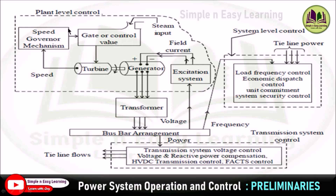If the differential speed is high, then the control valve starts closing so that the speed of steam flow is reduced, thereby the speed of the turbine is also reduced. The speed governor control controls system variables such as temperature, steam flow, and boiler pressure.